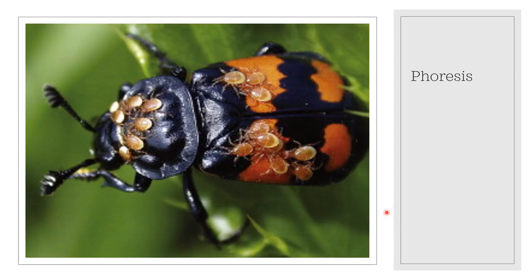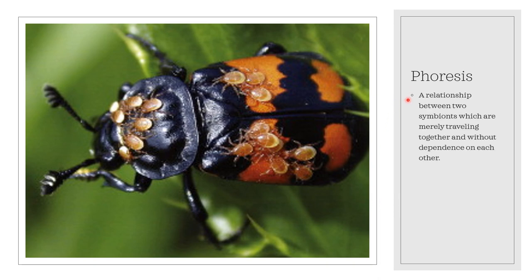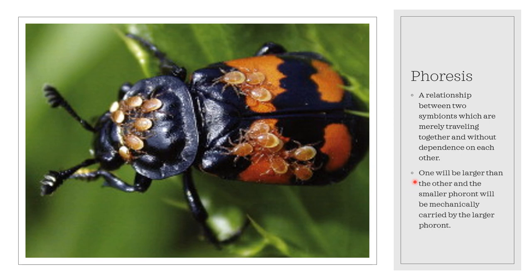One type of symbiotic relationship is phoresis. This is a relationship between two symbionts which are merely traveling together and without dependence on each other. The symbionts under the phoretic relationship are known as phoronts. One will be larger than the other, and the smaller phoront will be mechanically carried by the larger phoront. An example of a phoretic relationship is between a mite and a beetle, as shown in this diagram.